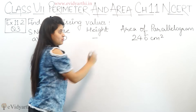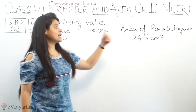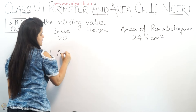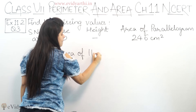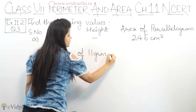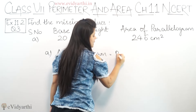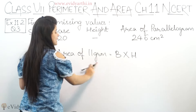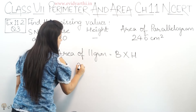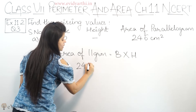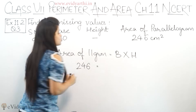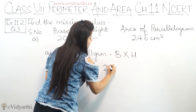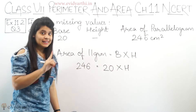So now we have to find the height. Base we have, area we have. Let's write the formula first. Area of parallelogram is equals to base multiplied by height. Now area of parallelogram is given, so we put it in: that is 246 equals to base, which is 20, multiplied by height.